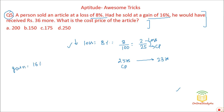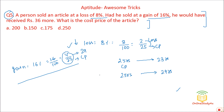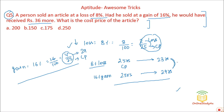If buying at 25 and selling at 23, that's an 8% loss with a difference of 2. If buying at 25 and selling at 29, that's a 16% gain. They tell us he would have received Rs. 36 more. Our calculated difference is 6 (29 − 23), and the actual difference is 36.